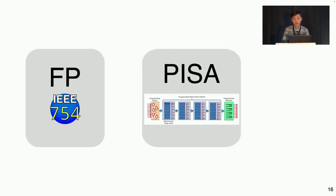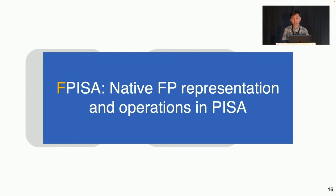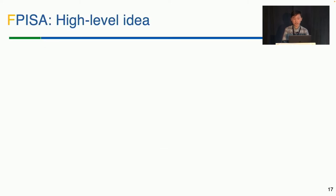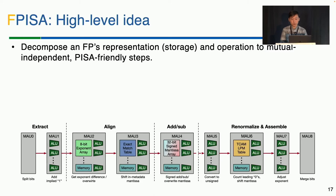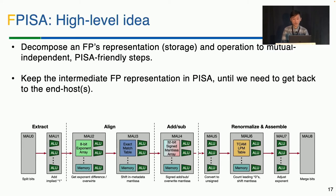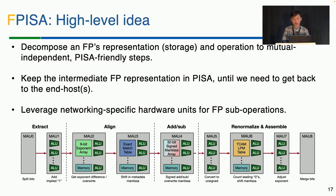Given floating-point format and the PISA paradigm, how can we combine them? In this work, we propose the FPISA mechanism, which enables native floating-point support in commodity PISA switches. Our FPISA mechanism has three main ideas: first, we decouple the floating-point representation and operations into mutually independent steps and allocate them across PISA pipeline stages. Second, we don't recover the standard floating-point format in the switch until we really need it on the end-host side. Third, we leverage the networking hardware for floating-point operations or sub-operations.